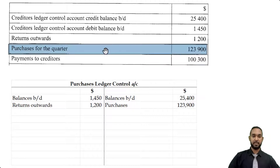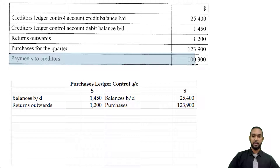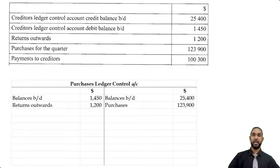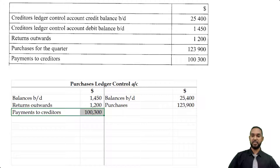I'm seeing payments to creditors, and the amount there is 100,300. When you pay back your creditors, you are paying off what you owe, thereby reducing your liability, which means the liability is decreasing. To record a decrease in a liability, you have to debit the liability account. So you're seeing that item on the debit side.